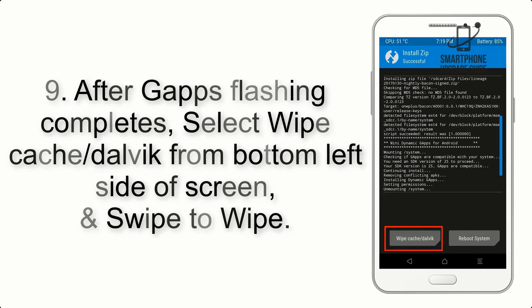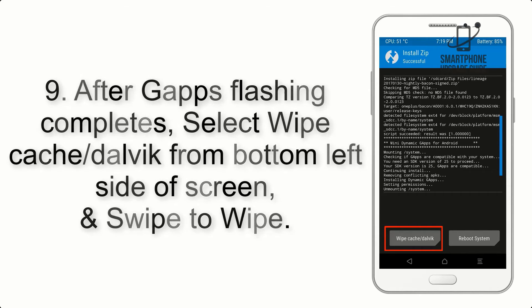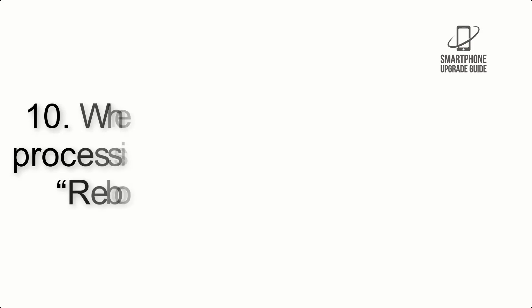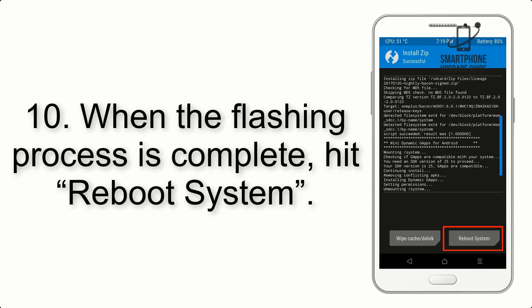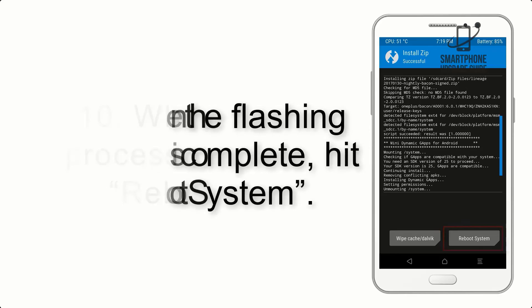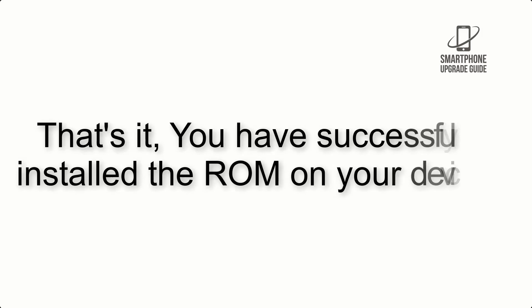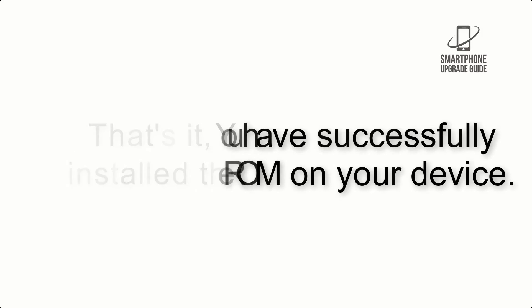Step 9: After GApps flashing completes, select Wipe Cache and Dalvik from the bottom left side of the screen and swipe to wipe. Step 10: When the flashing process is complete, hit Reboot System. That's it — you have successfully installed the ROM on your device.